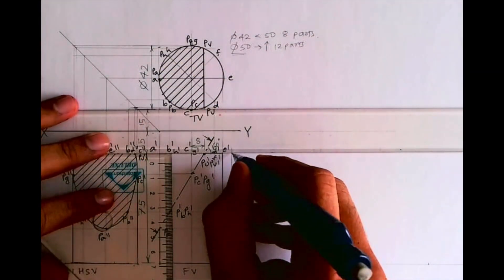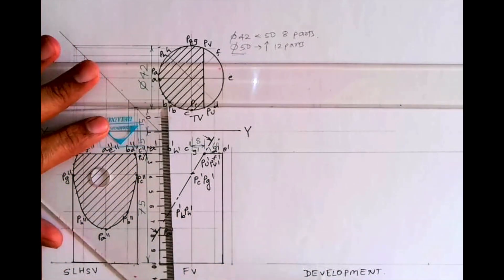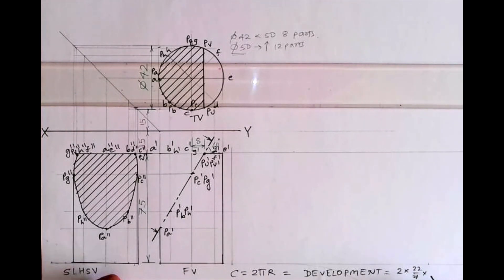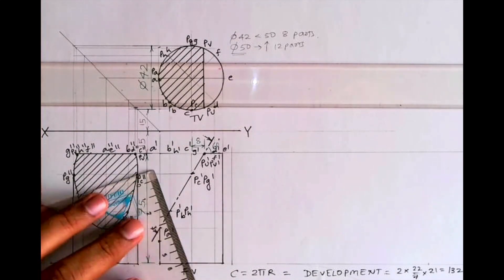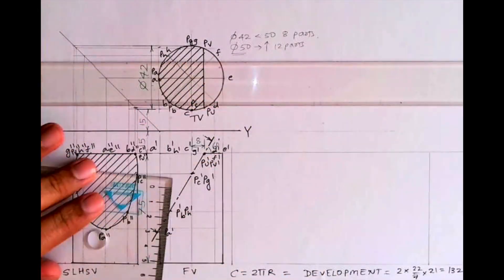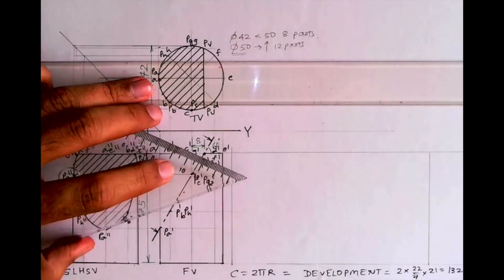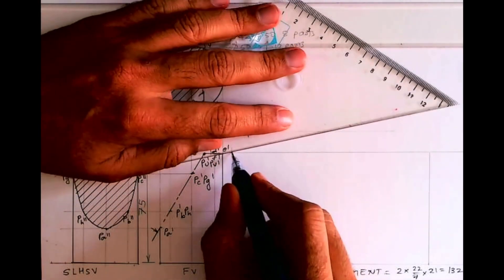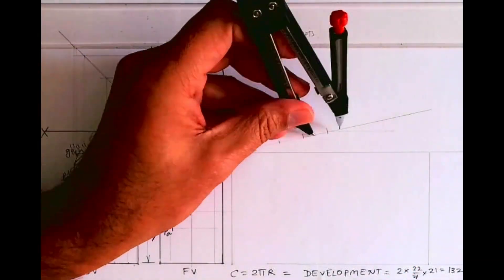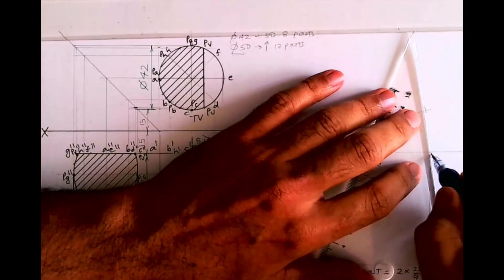Now we'll draw the development. The development length is 2πr. That is 2 × (22/7) × r. The radius is 21mm since the diameter is 42mm, so the length is 132mm. I will take a 132mm long line and draw a rectangle. We have divided the circle into eight parts, so I will divide this development also into eight parts.